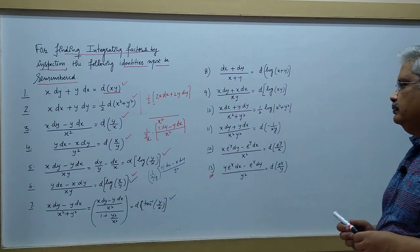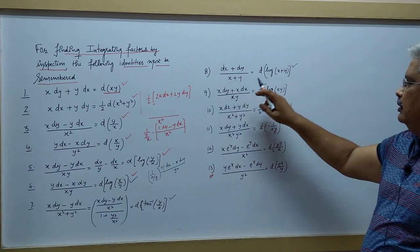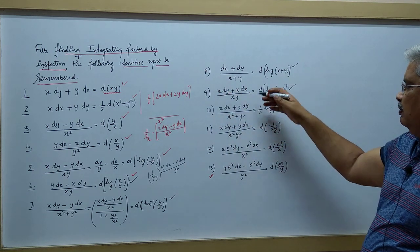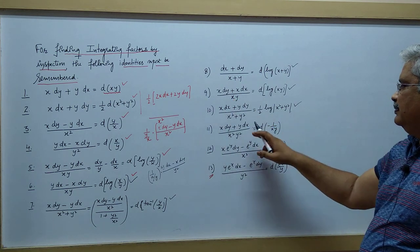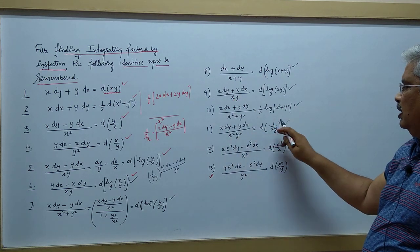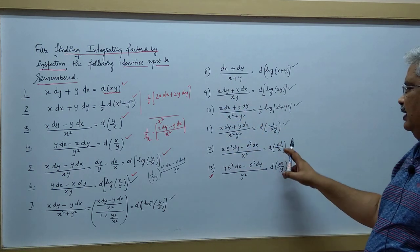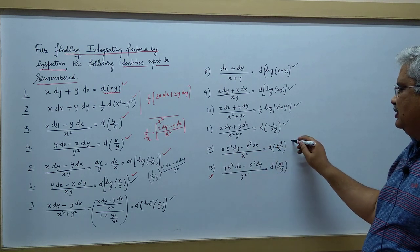One by xy into the product rule gives half log of xy. Similarly e^y·dx and related forms - if you apply quotient rule, these steps will come. So practice these a little bit.